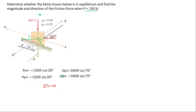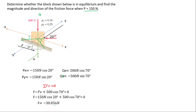To find F, we use the equilibrium condition: the sum of forces in the x-component equals zero. F is in the positive x direction, P is negative, and Qx is positive. Resolving correctly, we get F equal to negative 30.056 newtons. The negative sign indicates the direction — the friction force acts opposite to the direction assumed, so you can express the answer with the magnitude and an arrow showing its true direction.